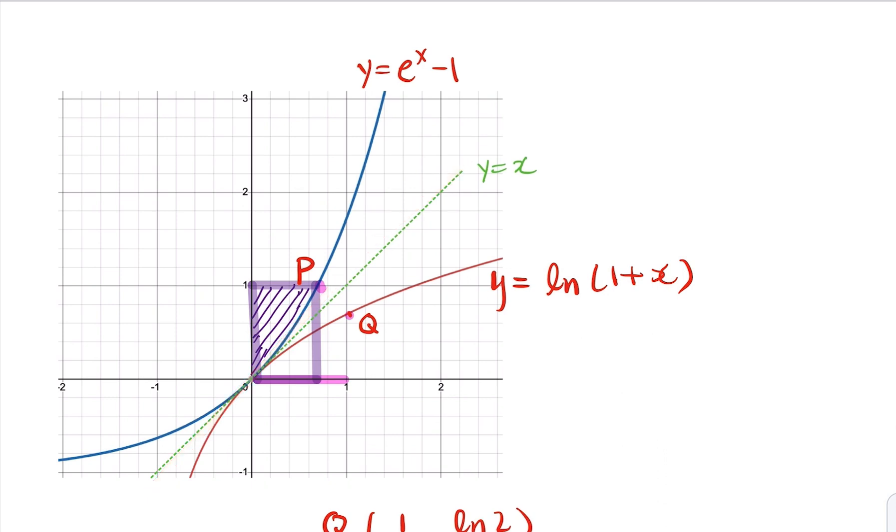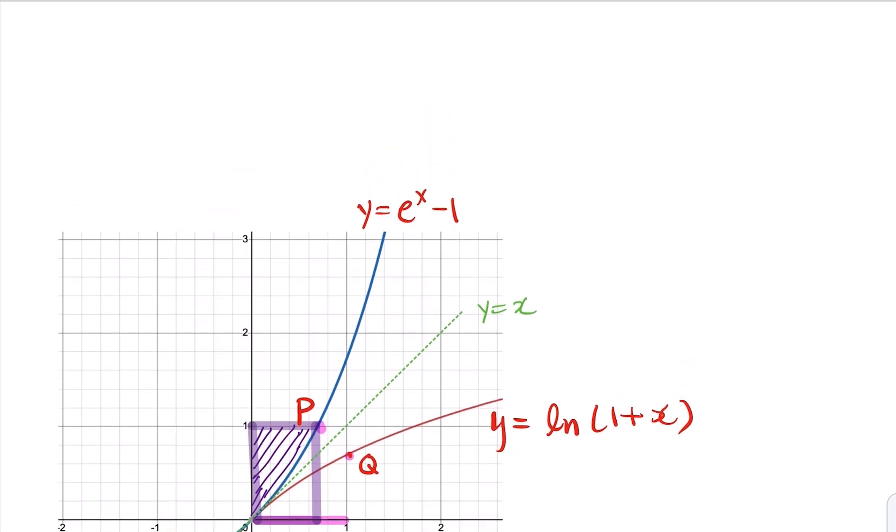Now for the integral we're looking for, which is this area, by the symmetric property is going to be this area, which is going to be the rectangle here, minus the integral of the exponential function. Alright, so let's do exactly that.